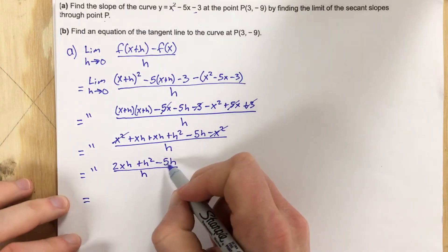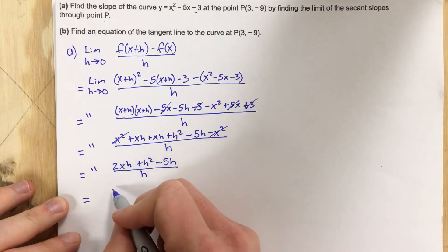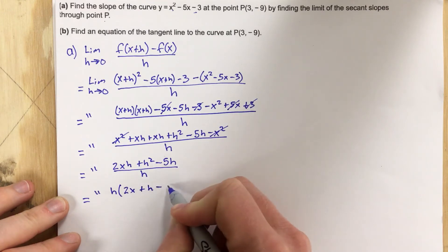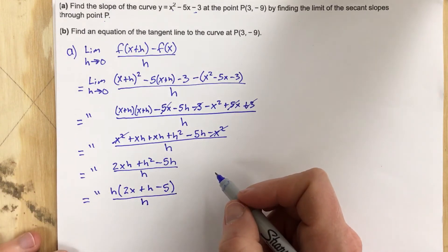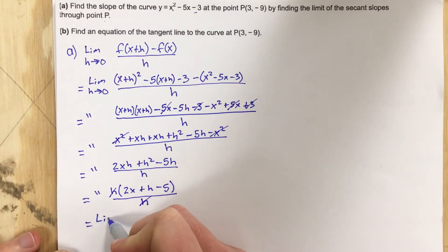So now I can factor out an h from each term in the top, and that will be h(2x + h - 5) all over h. Now I can cancel the h's out, which was my goal to start with, so that's equal to the limit as h approaches 0...